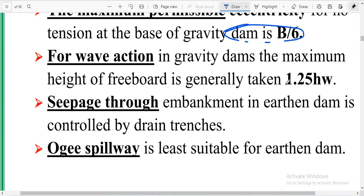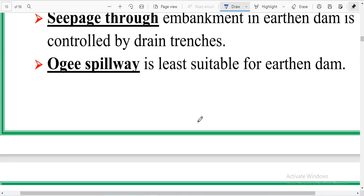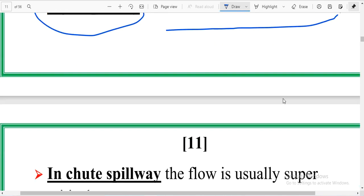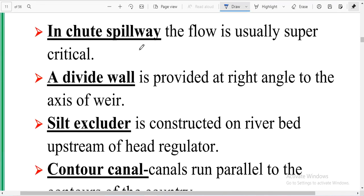Seepage through embankment in earthen dam is controlled by drainage. Ogee spillway is less suitable for earthen dam. In chute spillway, the flow is usually supercritical.